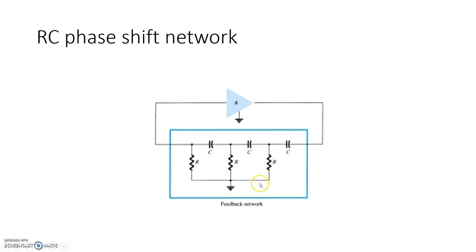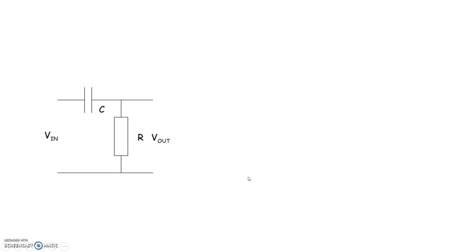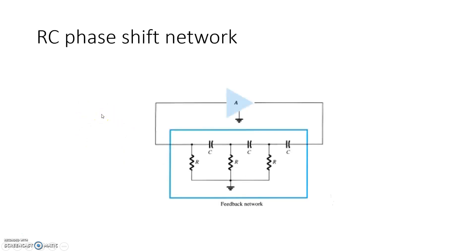If the amplifier block provides 180 degrees, the feedback network must provide the remaining 180 degrees. So the question is: can we get 180 degree phase shift from one RC section or two RC sections? Why do we use three? Let us discuss this.